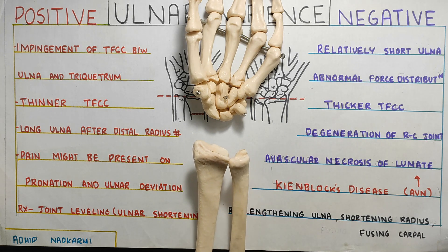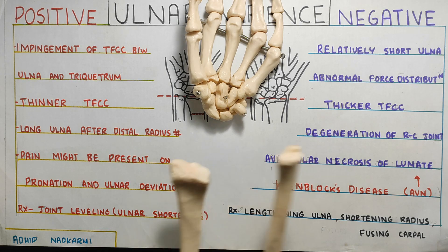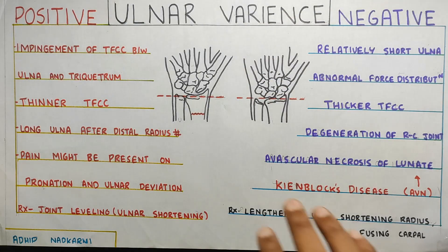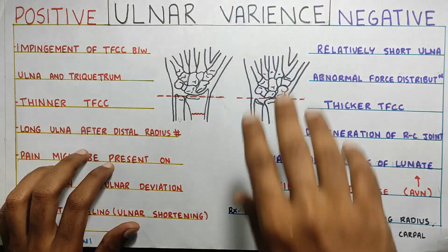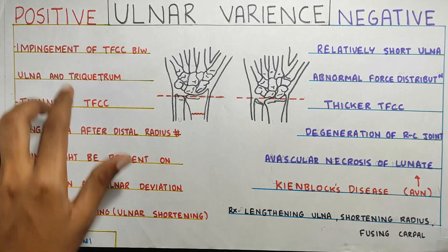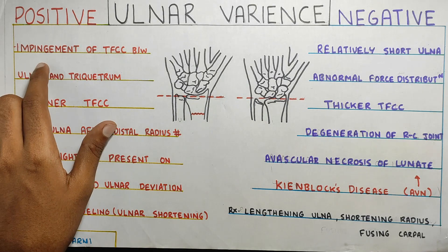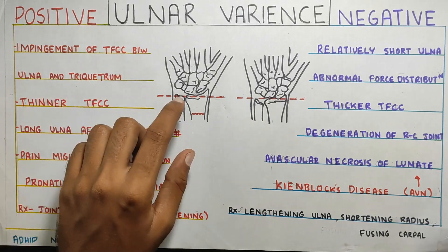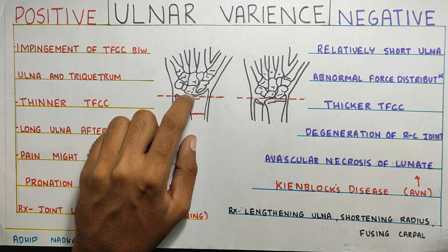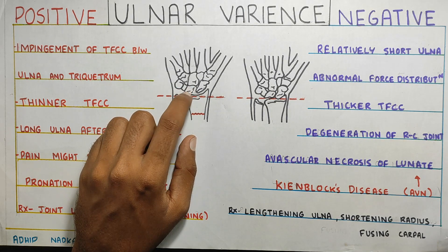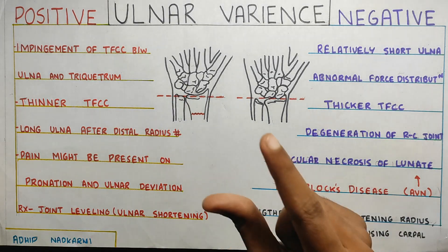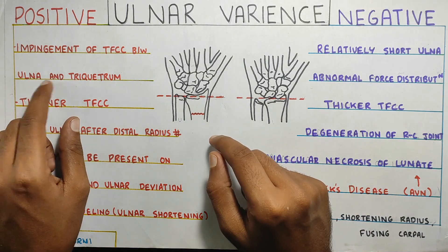A positive or negative variance of around 2 millimeters is acceptable. But more than that — where the ulna goes too low or too high — it is called positive or negative ulnar variance. Now going a bit deeper: in positive ulnar variance, there can be impingement of your TFCC. The TFCC structure, which we discussed in the last video, sits between your ulna, radius, and the carpal bones, and it can get impinged between your ulna and your triquetrum.